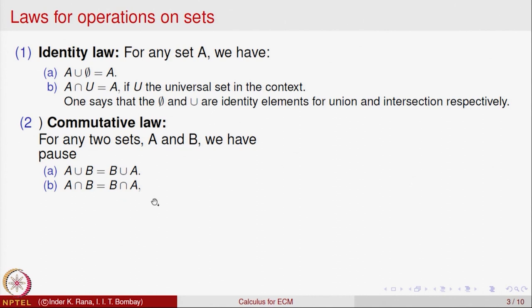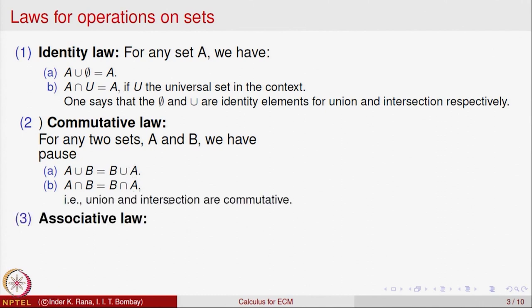Basically what we are saying is: in logical terminology, A and B is the same as B and A, and A or B is the same as B or A. These are the two laws which give us commutativity.